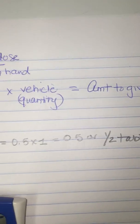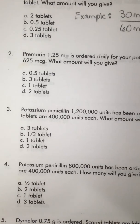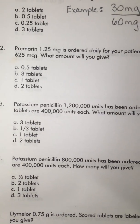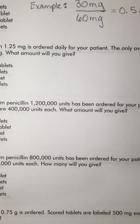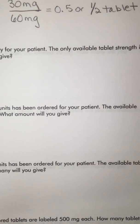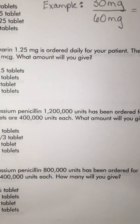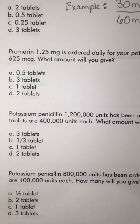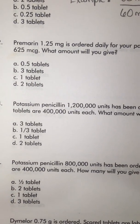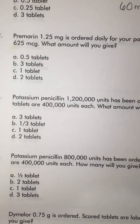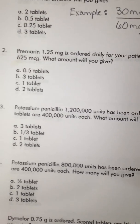Let's look at number two. Premarin 1.25 milligrams is ordered daily for your patient. The only available tablet strength is 625 mcg, which stands for micrograms. What amount will you give? Okay, so this one has to be set up like a proportion.